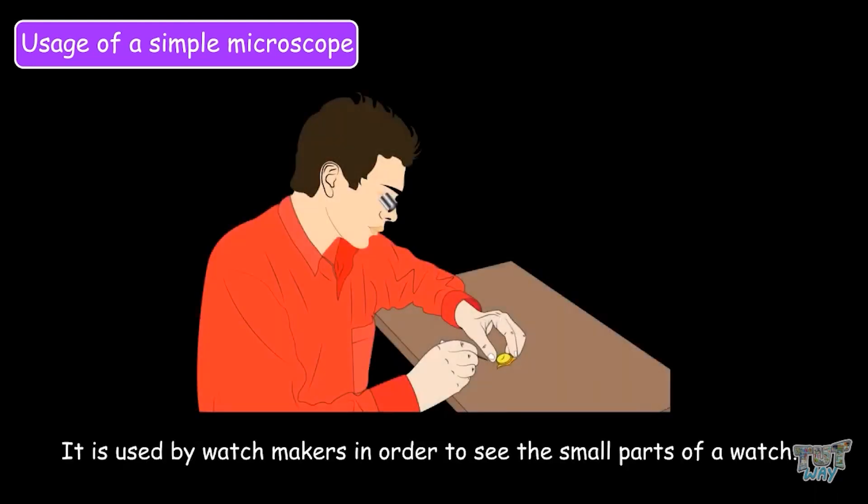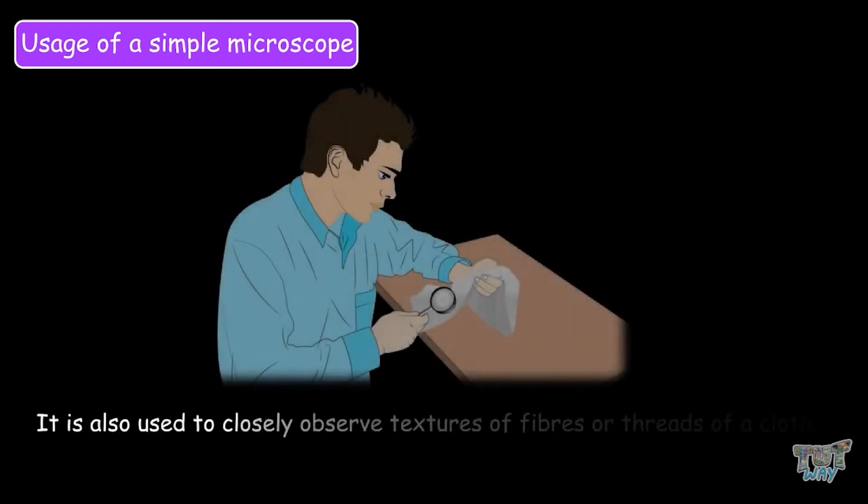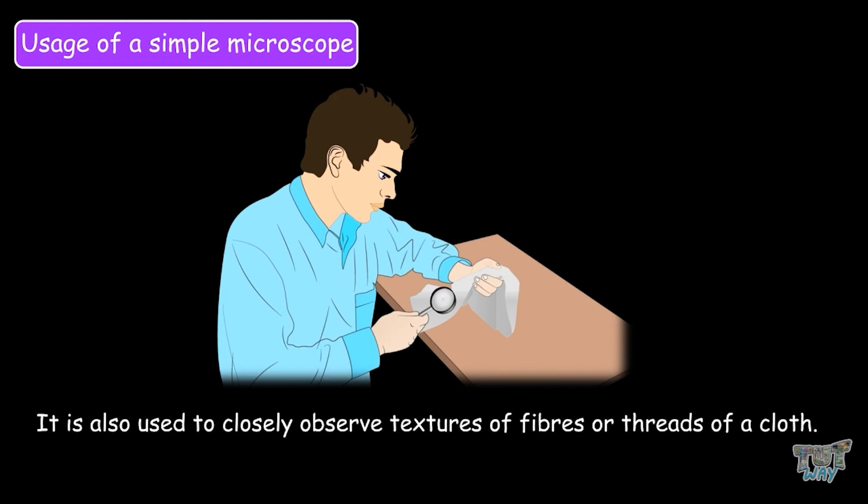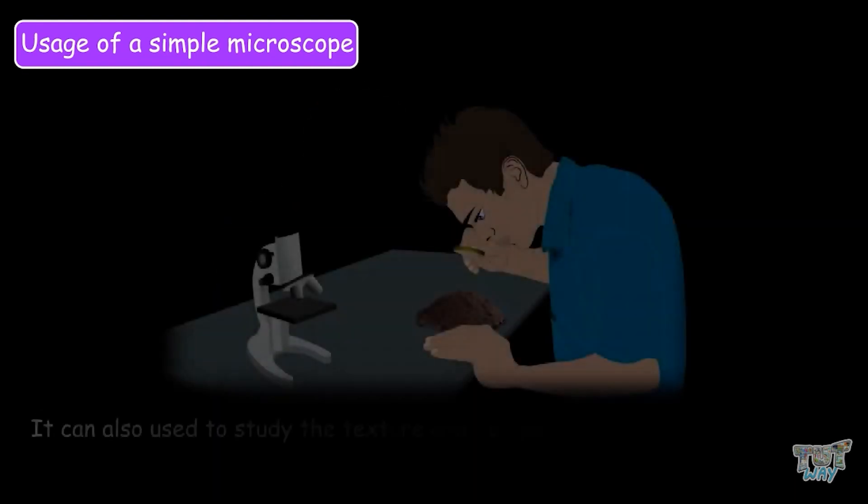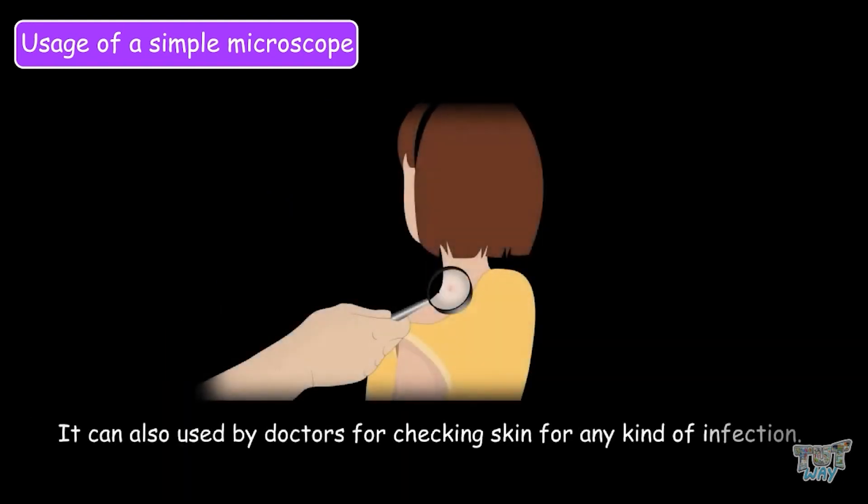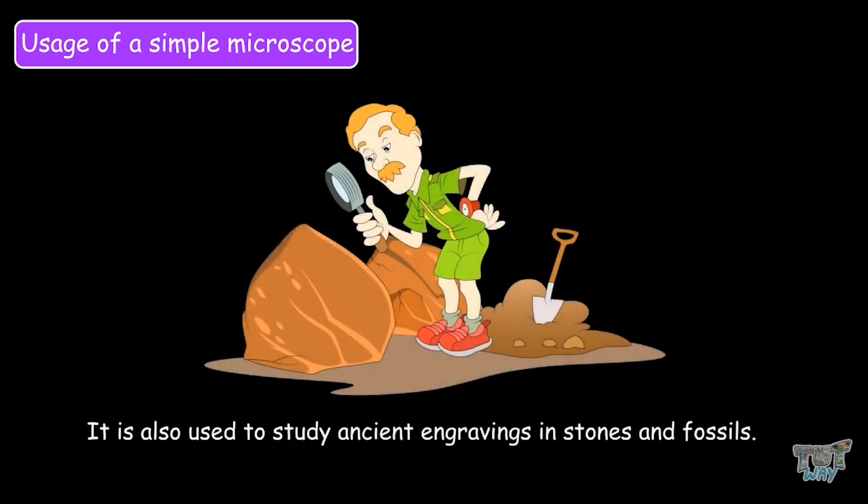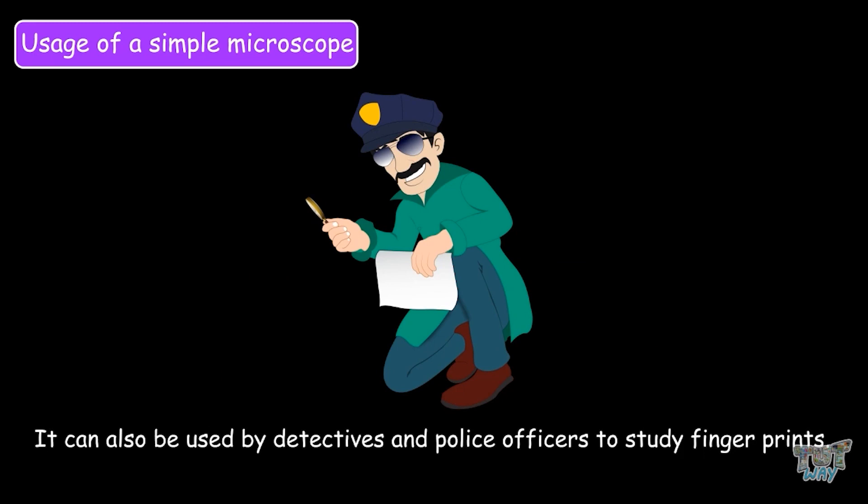Now let's learn the uses of the simple microscope. It is used by watchmakers in order to see the small parts of the watch. It is also used by jewelry makers so as to make beautiful jewelry. It is also used to observe textures of fibers or threads of a cloth. It can also be used to study the texture and composition of different types of soil. It is also used by doctors for checking the skin for any kind of infection. It is also used to study ancient engravings and stones and fossils. It can also be used by detectives and police officers to study fingerprints. So these were some of the uses of the simple microscope.